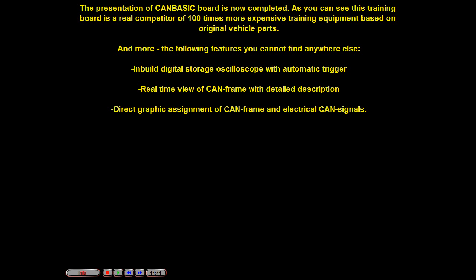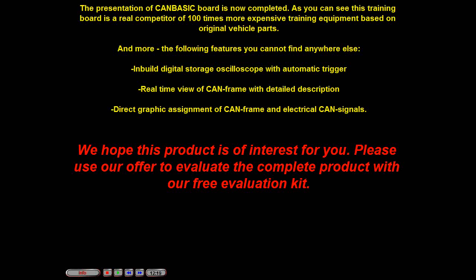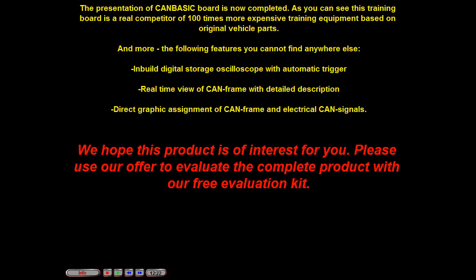The presentation of the CAN-BASIC board is now completed. As you can see, this training board is a real competitor of 100 times more expensive training equipment based on original vehicle parts. The following features you cannot find anywhere else: inbuilt digital storage oscilloscope with automatic trigger, real-time view of CAN frame with detailed description, and direct graphic assignment of CAN frame and electrical CAN signals. We hope this product is of interest for you. Please use our offer to evaluate the complete product with our free evaluation kit.